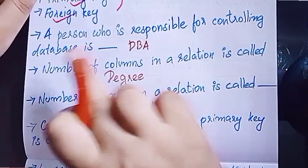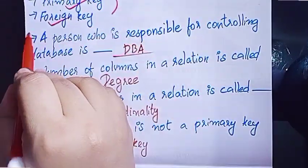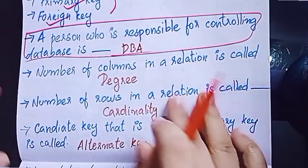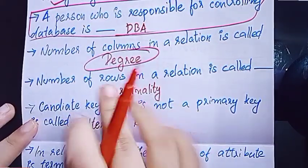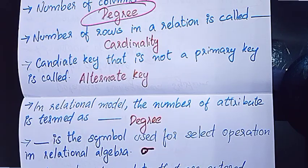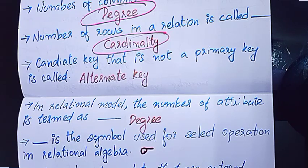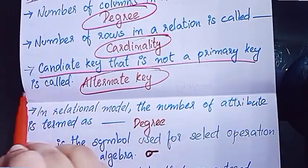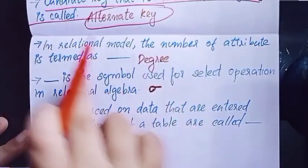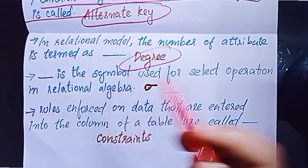A person who is responsible for controlling the database is called DBA. The number of columns in a relation is called Degree. The number of rows in a relation is called Cardinality. A candidate key that is not a primary key is called an Alternate key. In the relational model, the number of attributes is termed as Degree.